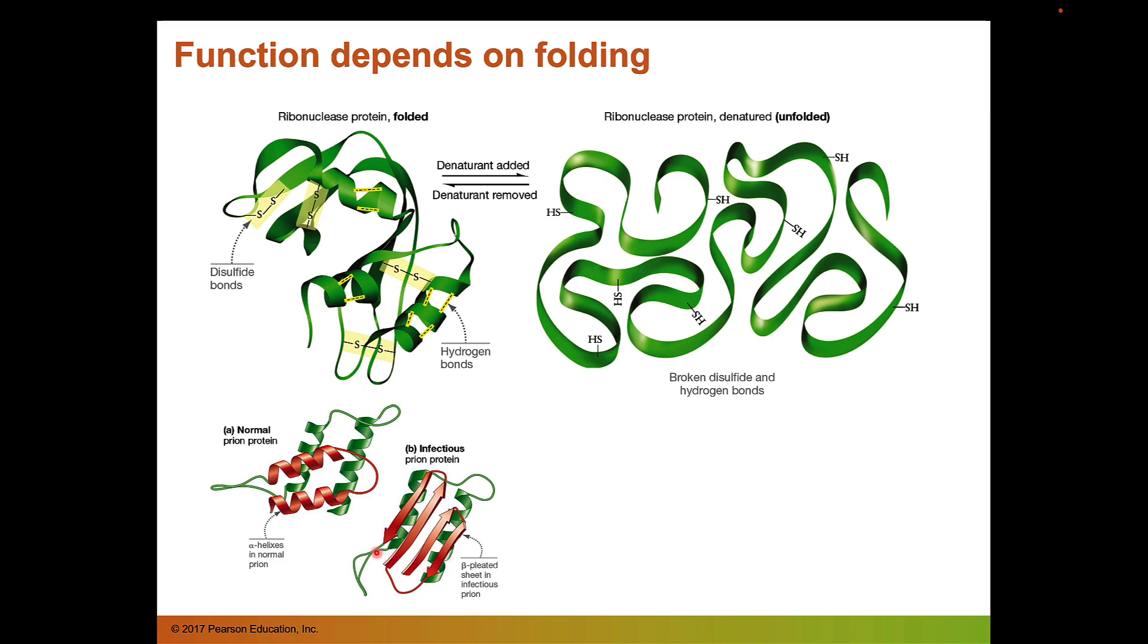Once this infectious prion protein is in the brain like in mad cow, it will also cause other normal prion proteins to convert to this alternate conformation with these beta pleated sheets. And so this is how a protein is infectious. And this is a really interesting example of it affecting the secondary structure instead of the tertiary structure.